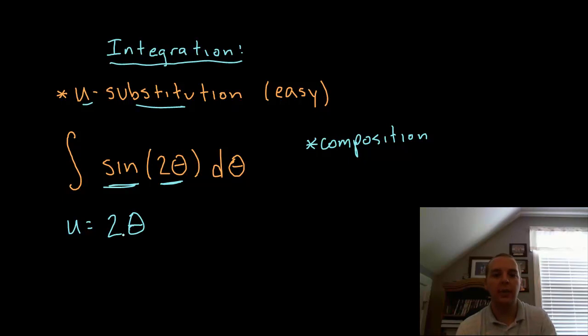Now just to prevent us from having sine of u, the sine of 2 theta, sine of u d theta, since those variables don't match, then I'll also need a du. So du, if this is u, the du would be the derivative of 2 theta, so that's a 2 d theta.